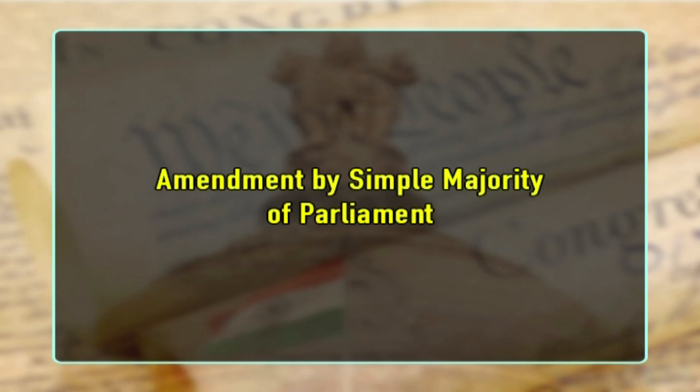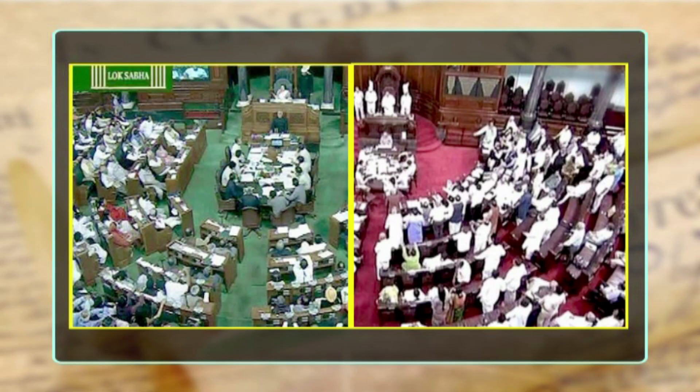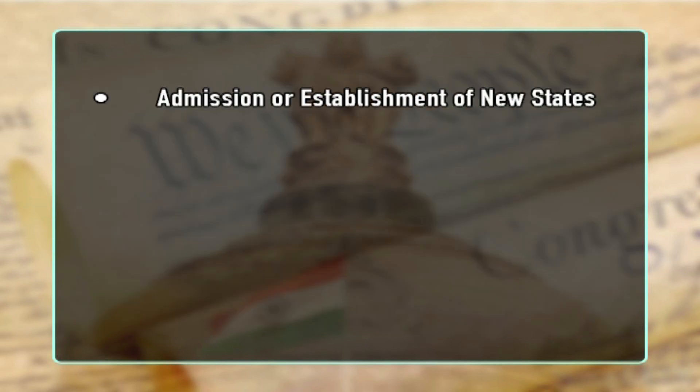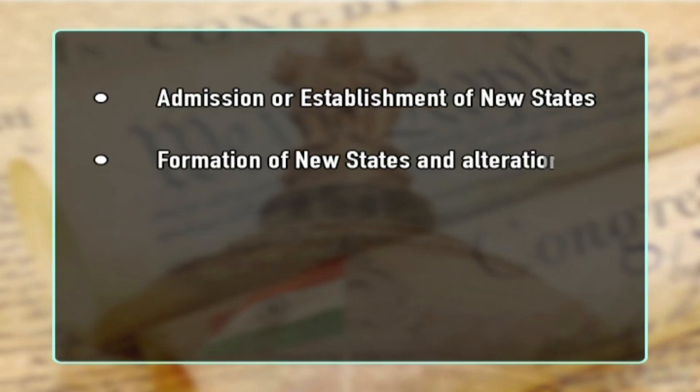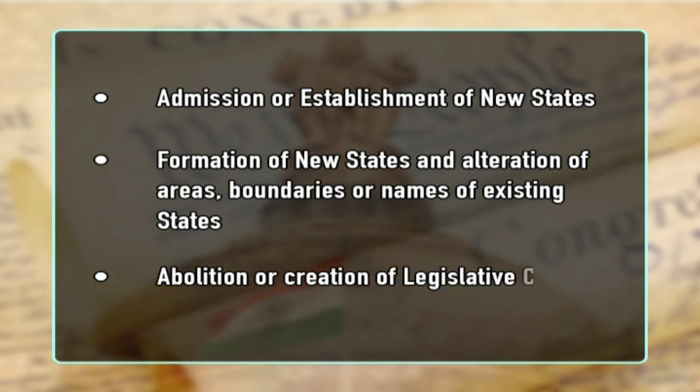Amendment by simple majority of parliament: This type of amendment can be effected by a simple majority such as that required for the passing of any ordinary law. Amendments under this category are specifically excluded from the purview of Article 368. A number of provisions in the constitution can be amended by a simple majority of the two houses of parliament. These provisions include admission or establishment of new states, formation of new states and alteration of areas, boundaries or names of existing states, and the creation or abolition of legislative councils in the states.